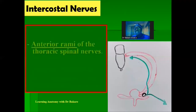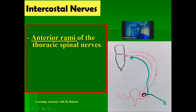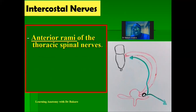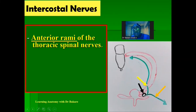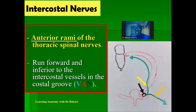The intercostal nerves are the anterior rami of the thoracic spinal nerves. The spinal nerve exits through the intervertebral foramen — the foramen created between two adjacent vertebrae. From this foramen, both a posterior ramus and an anterior ramus emerge. It is the anterior ramus that becomes the intercostal nerve. As it runs forward through the intercostal space, it is seen at the most inferior part of the intercostal vessels, consistent with the VAN arrangement.